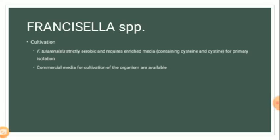Francisella tularensis is strictly aerobic and requires enriched media containing cysteine for primary isolation. It may initially grow on soy broth agar but is fastidious and requires supplementation with cysteine or thiosulfate for growth on successive passages.